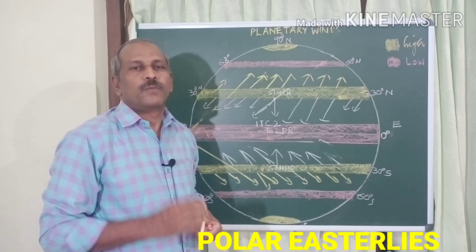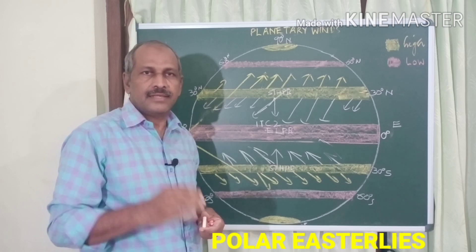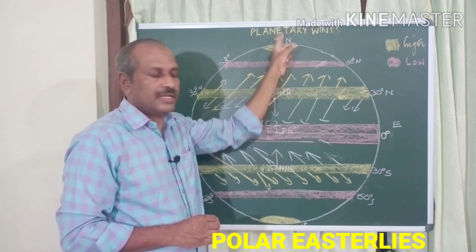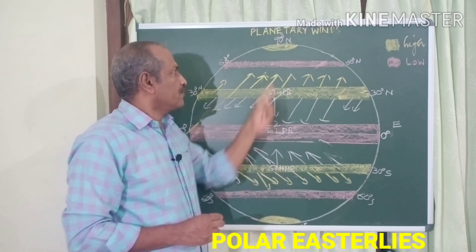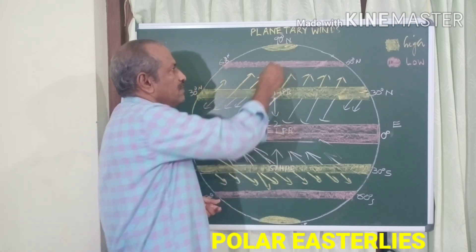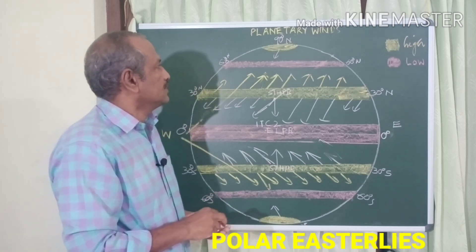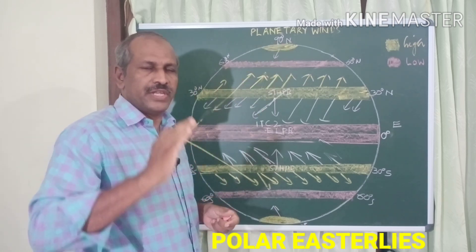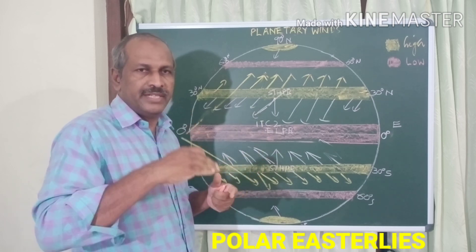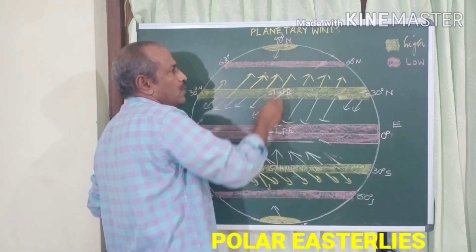The third type is polar easterlies — a planetary wind blowing from the polar high pressure belt to the subpolar low pressure belt in both hemispheres. The north and south poles are very cold and are centers of high pressure, around 90° north and 90° south. A cold wind blows from these polar high pressure belts, and at the polar region the Coriolis force is very strong, deflecting the wind greatly.